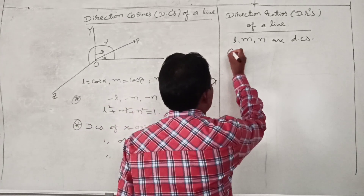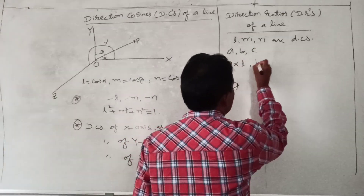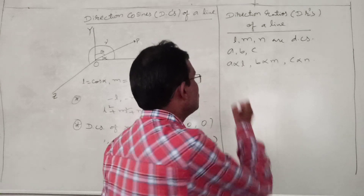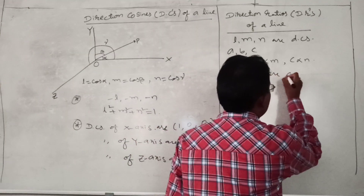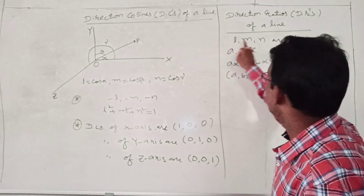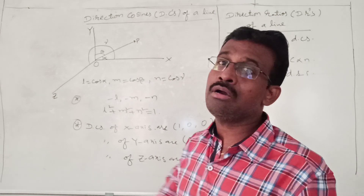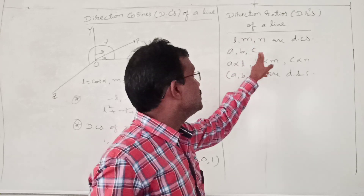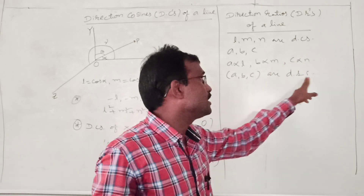Now define 3 real numbers A, B, C in such a way that A is directly proportional to L, B is directly proportional to M, and C is directly proportional to N. Then these A, B, C are called direction ratios of that same line. The real numbers which are proportional to direction cosines of a line are called direction ratios of that line.